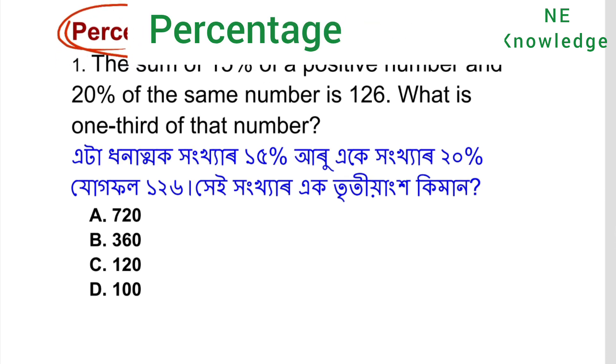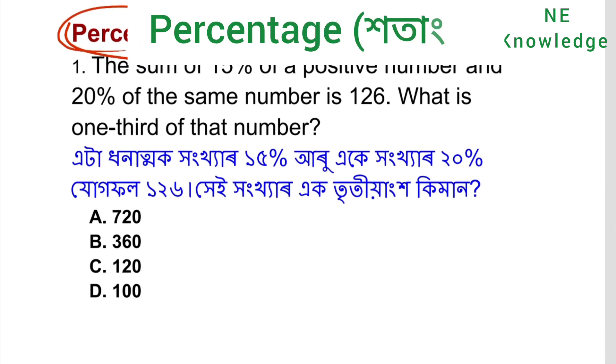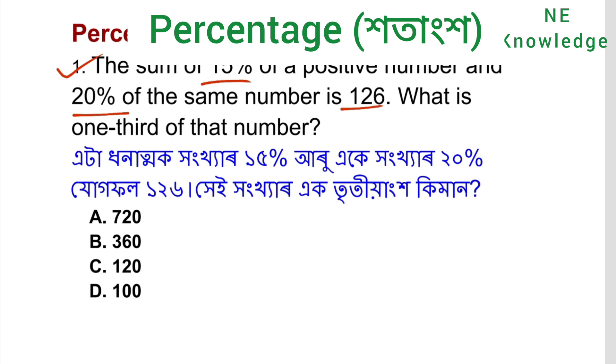Question 1. The sum of 15% of a positive number and 20% of the same number is 126.